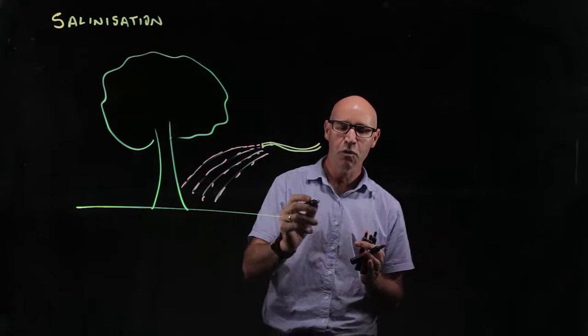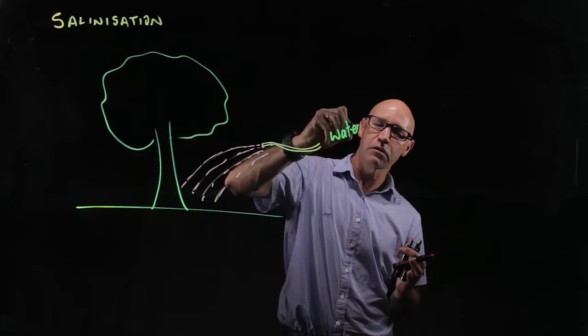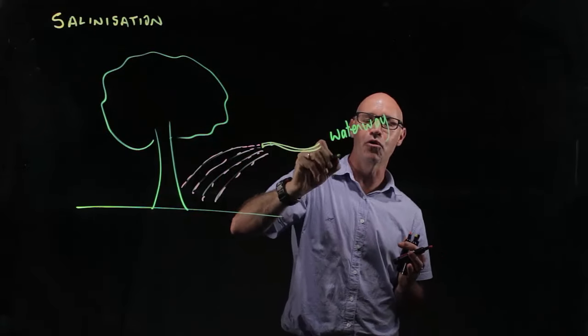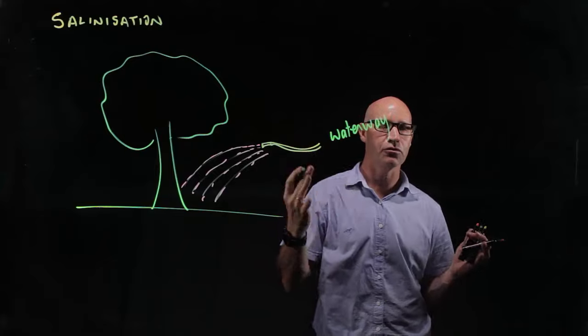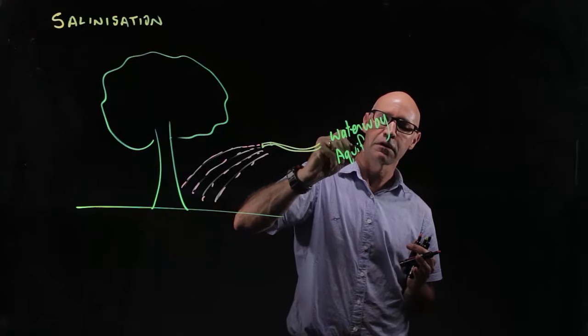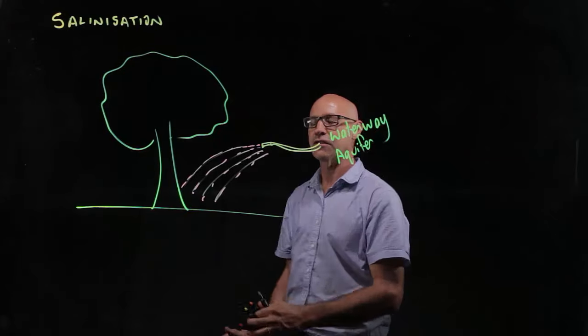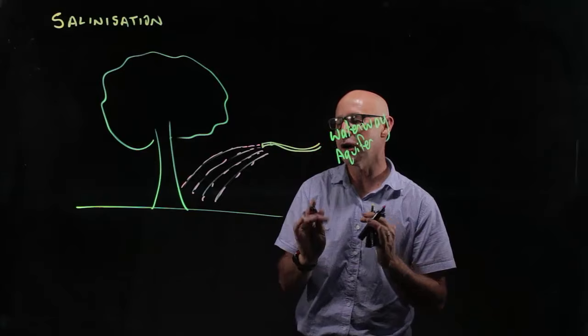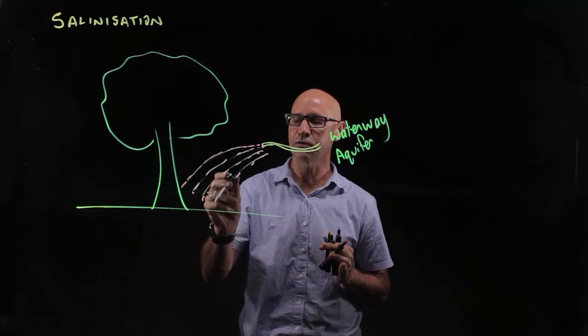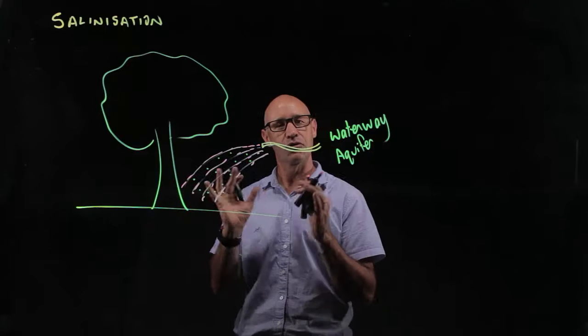Where do they get this water from? It could be from a waterway or it could be from a bore—groundwater or an aquifer. The water is taken from somewhere else and put onto the land. Even though it's fresh water, there are still some mineral salts in the water.